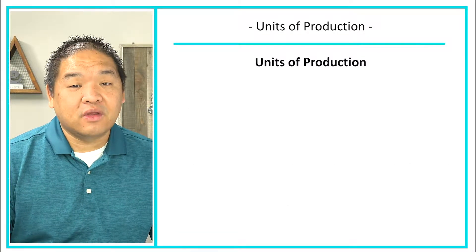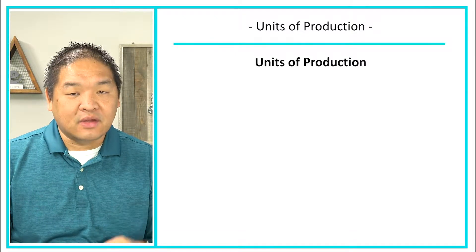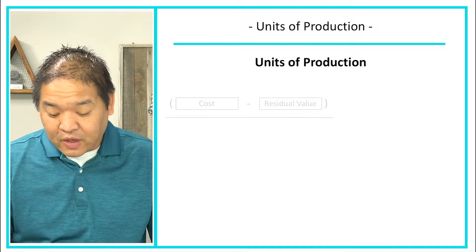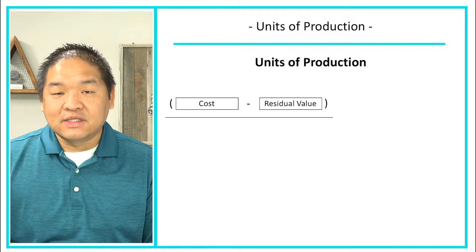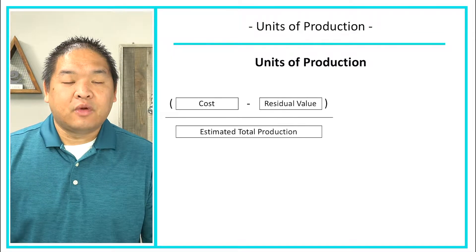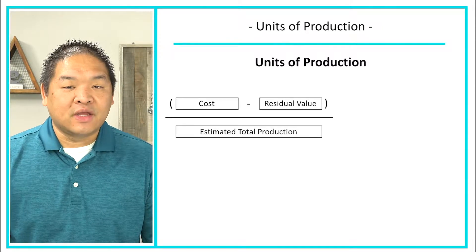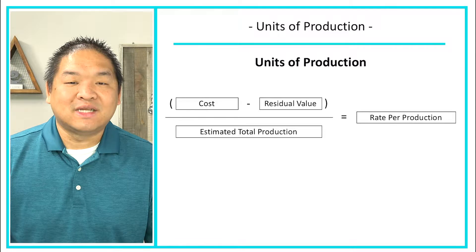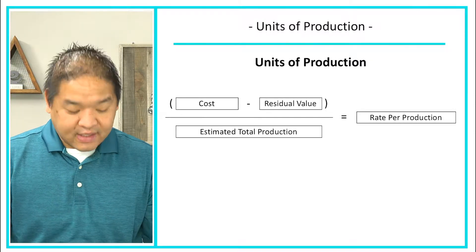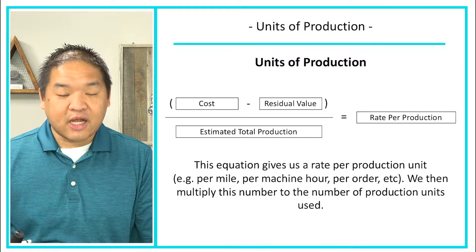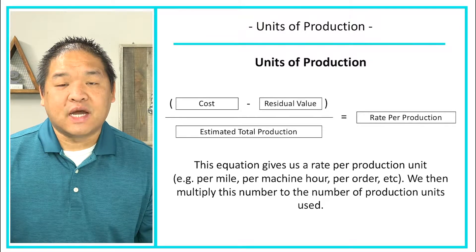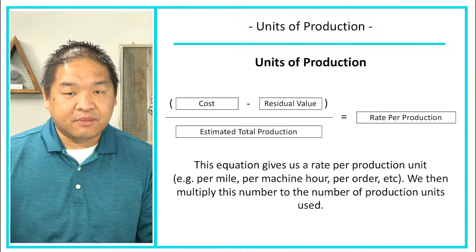How do we calculate it? It's actually fairly simple. We take the cost, subtract the residual value, and then divide it — not by useful life in years — but by the estimated total production: the total estimated activity use before we have to replace or dispose of the long-lived asset. That gives us a rate per production unit — for instance, rate per mile, per machine hour, per order. We then multiply this rate by the number of production units used.